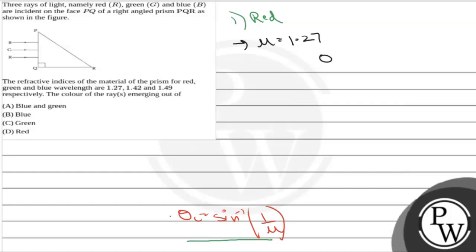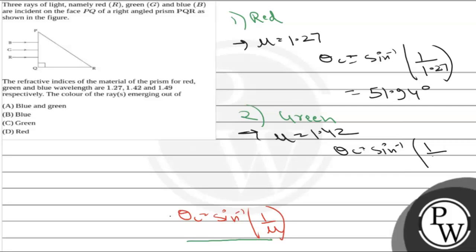For red, mu equals 1.27, so theta c equals sin inverse of 1 upon 1.27, which equals 51.94 degrees. Now if we see the second color which was green, its refractive index is given as mu equals 1.42, so critical angle theta c equals sin inverse of 1 upon 1.42, and this will be equal to 44.72 degrees.